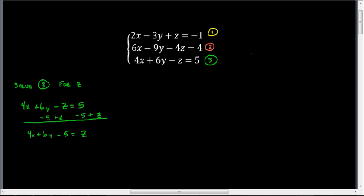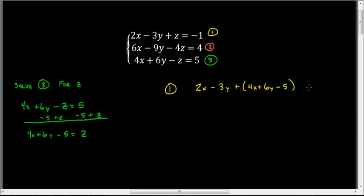Now I'm going to take that value of z and substitute it into equation 1 for z. When I get done with this, I'm going to rename equation 1 as equation A — that makes it easier to keep track of what I've done and at which level. So equation 1 becomes: 2x minus 3y plus, and now my z value is (4x plus 6y minus 5), and all of that equals negative 1. Note that the 5 from equation 3 does not combine with the negative 1 in equation 1 — it's all contained within the substitution of z.